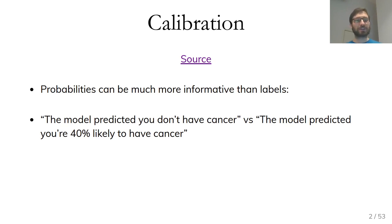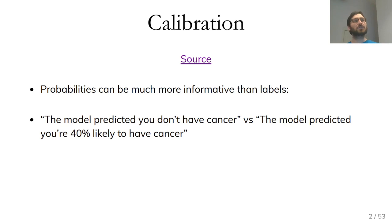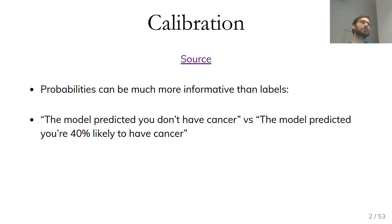If you want to communicate to a user like a diagnosis, saying the model predicted you don't have cancer is very different from the model predicted you're 40% likely to have cancer. If you threshold by the default 50%, these two statements will be the same, but probably if you tell someone they're 40% likely to have cancer, they will react very differently than telling them they don't have cancer.